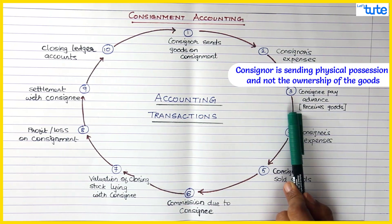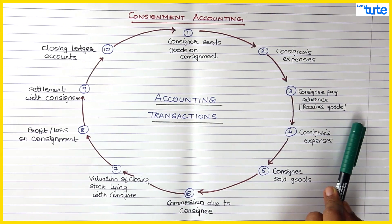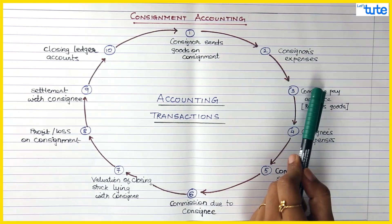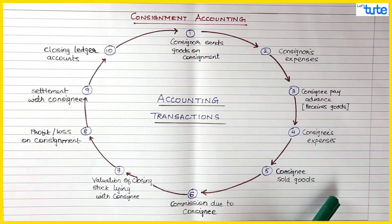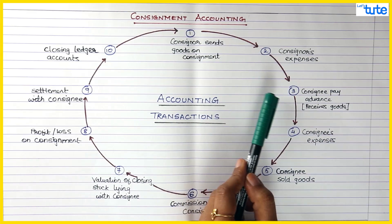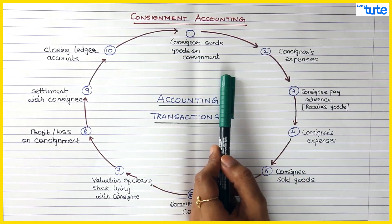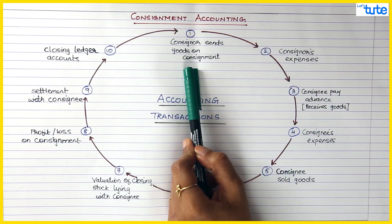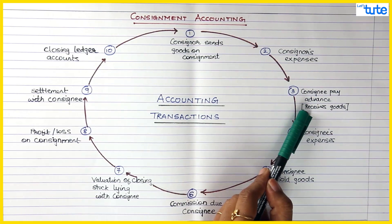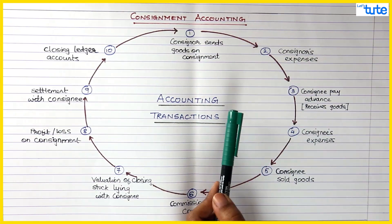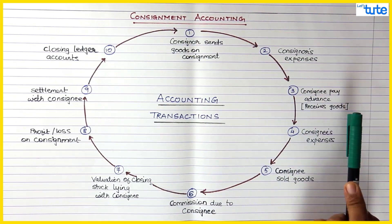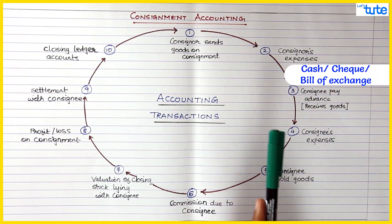When the consignee receives the goods, the consignee might pay some advance to the consigner. All the goods are with the consignee, who is going to sell them and receive payment, then remit to the consigner. But there is a risk that the consignee hasn't yet paid, so the consigner might ask for an advance, or draw a bill of exchange on the consignee — like a 30-day or 90-day bill as per the agreement. Step three is: consignee pays advance, either as cash, bank, cheque, or a bill of exchange.